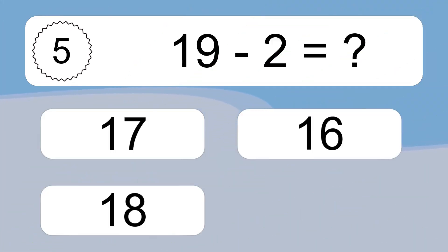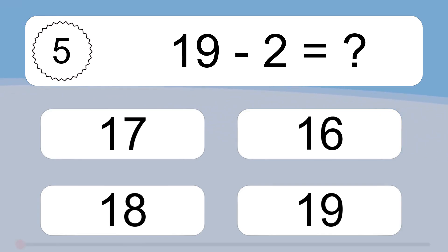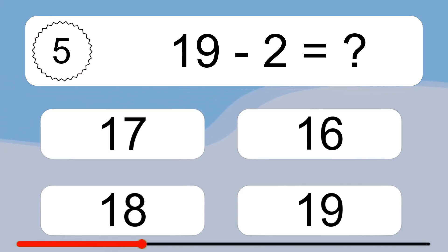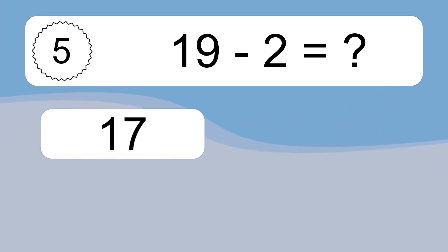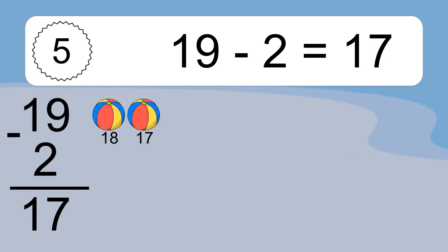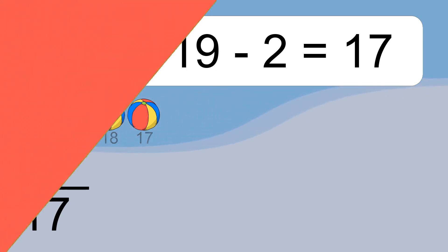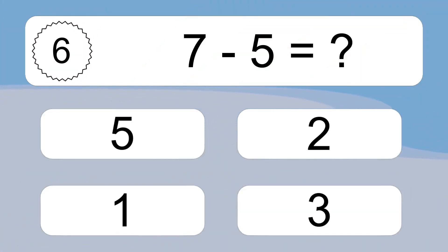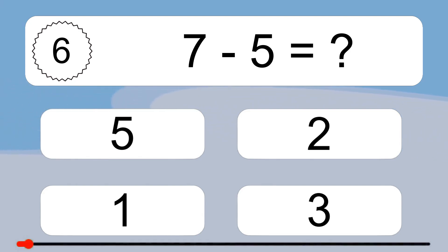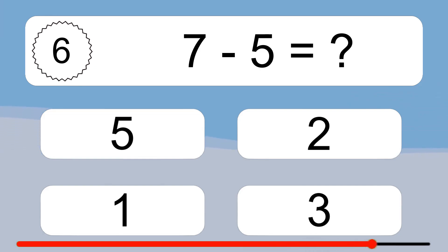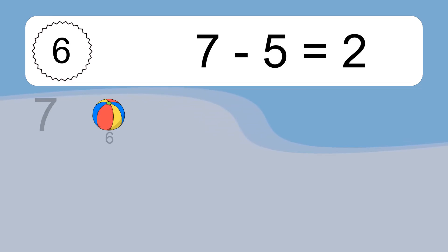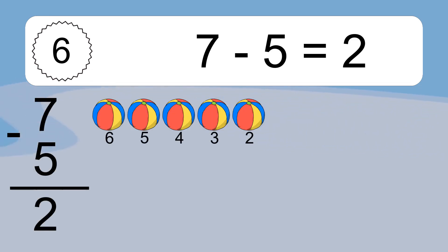19 minus 2 equals what? 19 minus 2 equals 17. Let's count it: 18, 17. 7 minus 5 equals what? 7 minus 5 equals 2. Let's count it: 6, 5, 4, 3, 2.